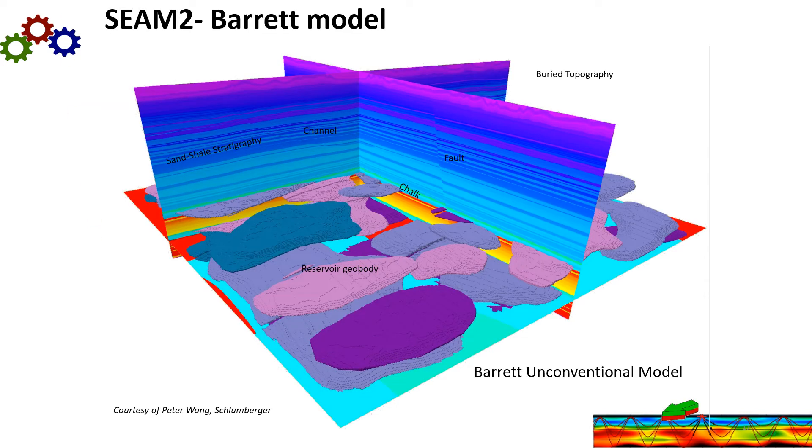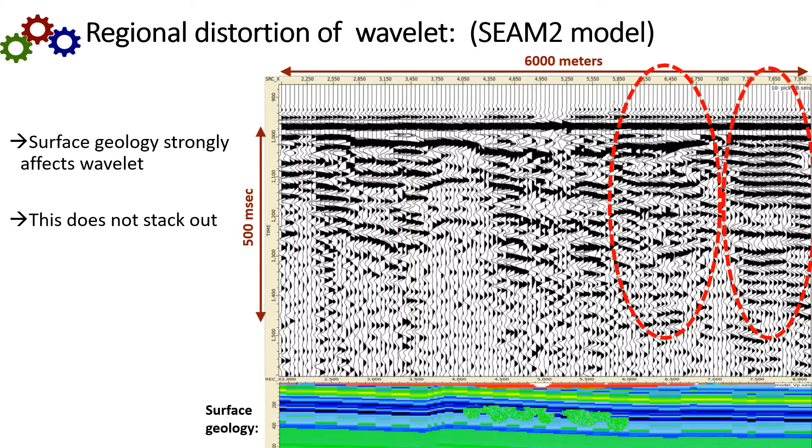To demonstrate the effects of this regional distortion, I'm going to use the SEAM model. And the nice thing about the SEAM model, of course, is that we know the correct answer. So we have some geo bodies here at depth, which are the objective. And you see the velocity model here, and you'll notice there's some complications in the near surface. This is buried topography, and that's going to create regional effects on the source and the receiver.